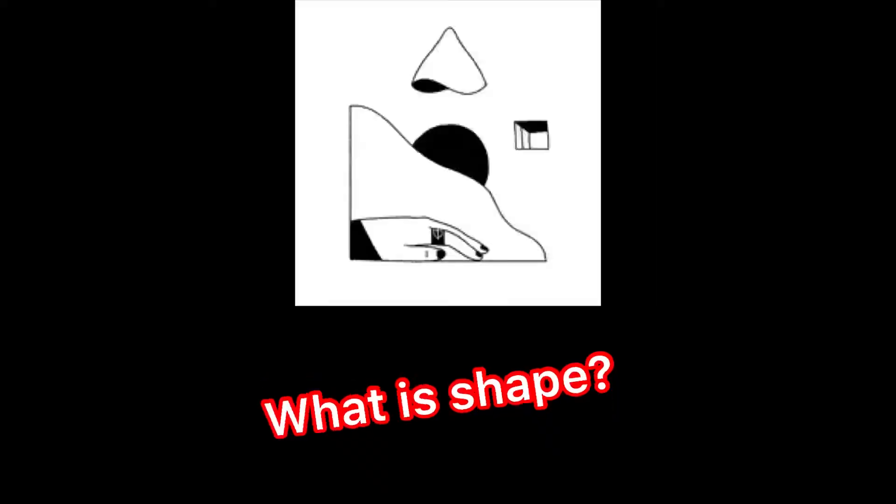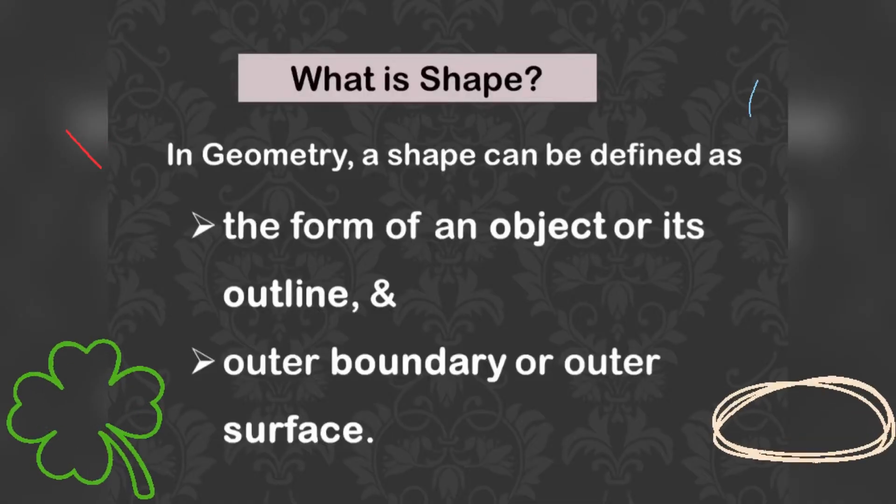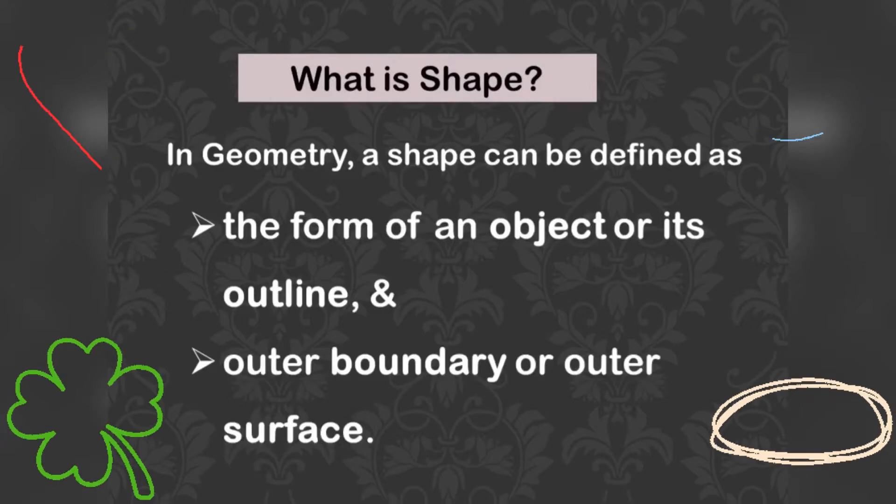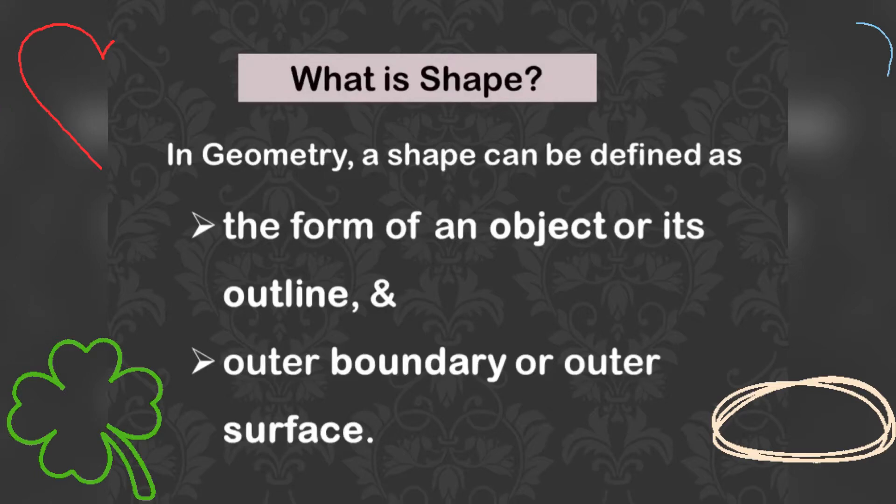Do you know what is a shape? In geometry, a shape can be defined as the form of an object or its outline, an outer boundary or outer surface.